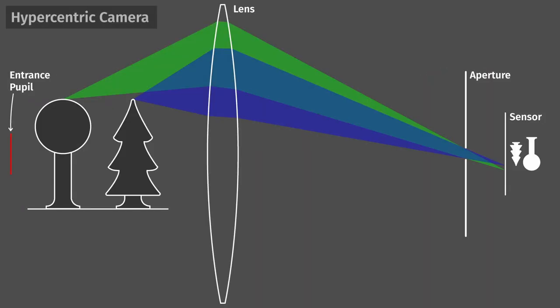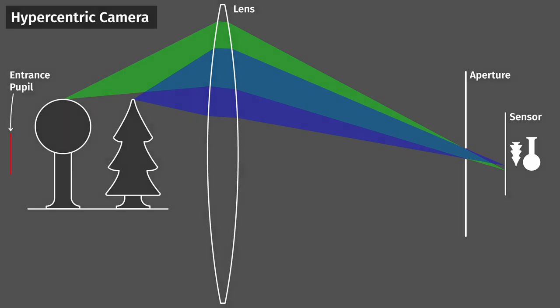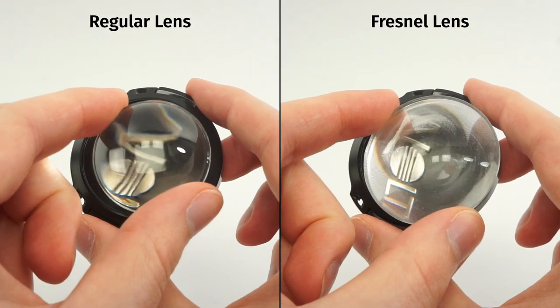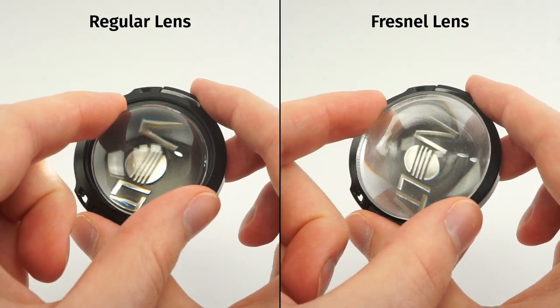That's called a hypercentric camera, and the most important part of this optical system is the diameter of the entrance pupil. Our first lens must be larger than whatever you want to take an image of, and if you want to take portraits, your lenses better be much bigger than a head. It's pretty much impossible to buy a conventional lens that size, so we had to go with a Fresnel lens.